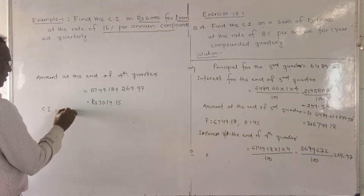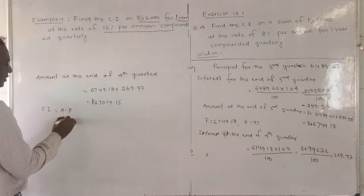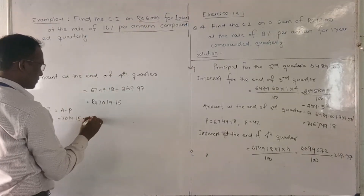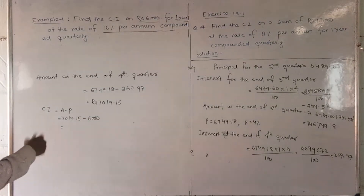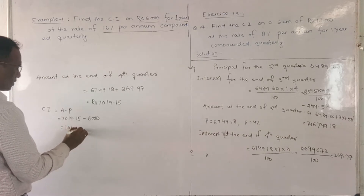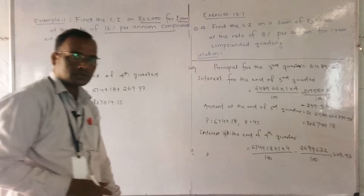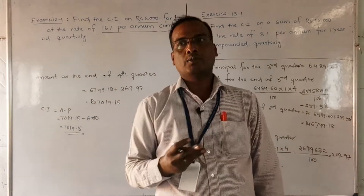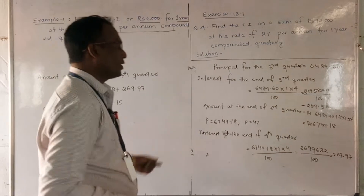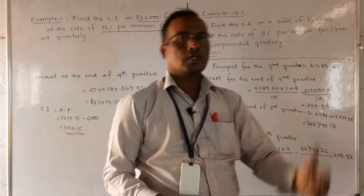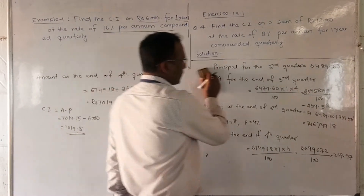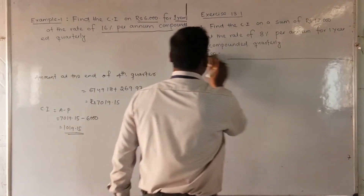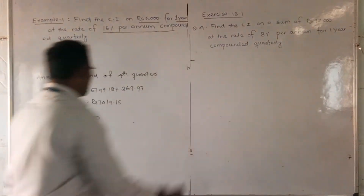Compound Interest = Amount − Original Principal = ₹7019.15 − ₹6000 = ₹1019.15. So the compound interest is ₹1019.15. Since it was quarterly, we calculated interest four times, adding interest to the principal each period and finally subtracting the original principal from the final amount.